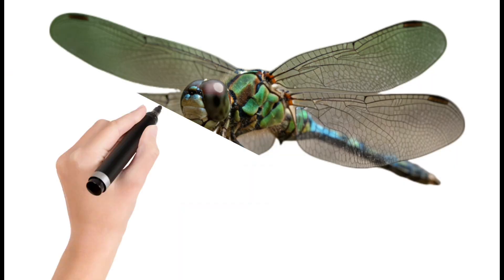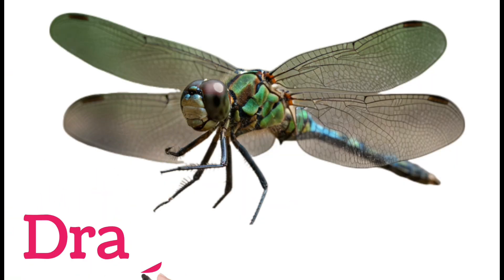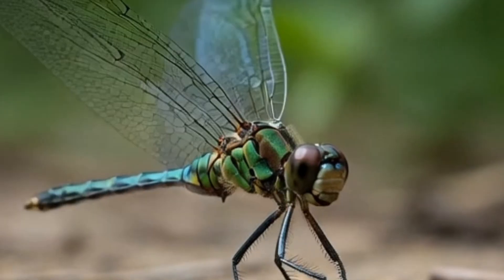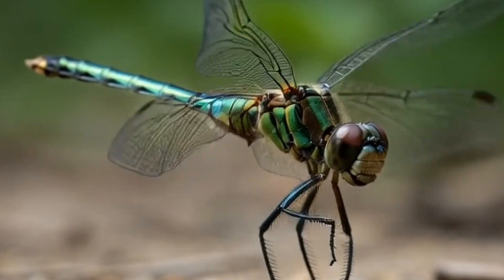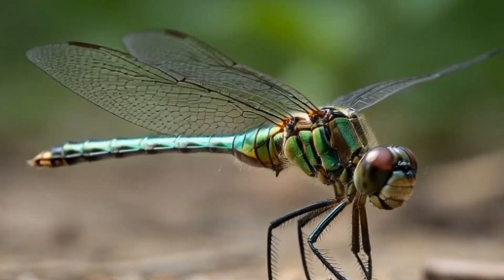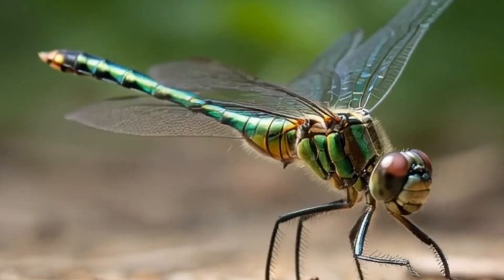Dragonfly. A dragonfly is a fast-flying insect found near water. It has long wings and a slender body. Dragonflies eat mosquitoes and small insects.